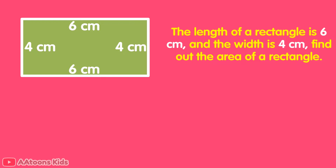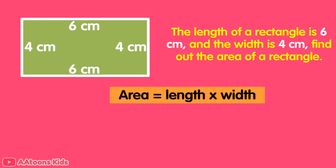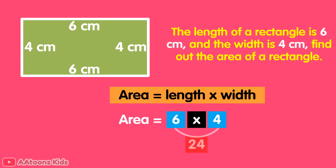To solve this, we use the formula: Area equals length multiplied by width. Length is 6 cm and width is 4 cm. Now, 6 multiplied by 4 equals 24. So the area of the rectangle is 24 cm².